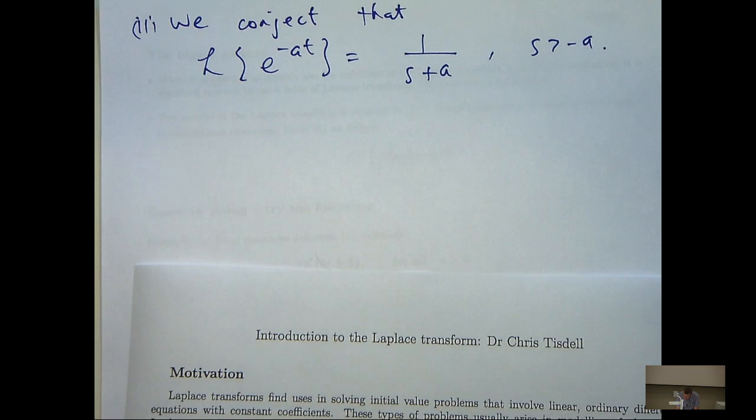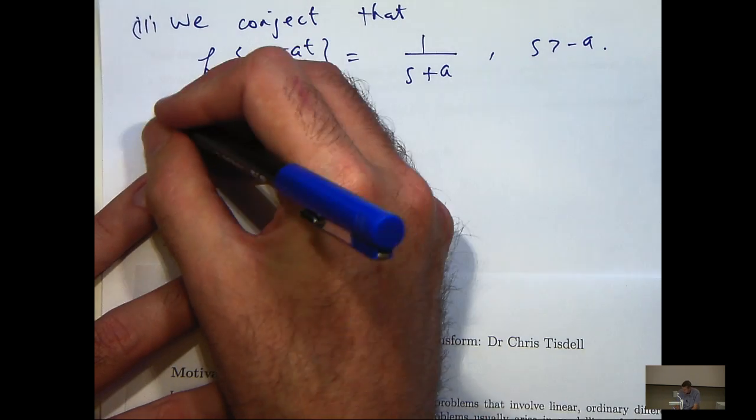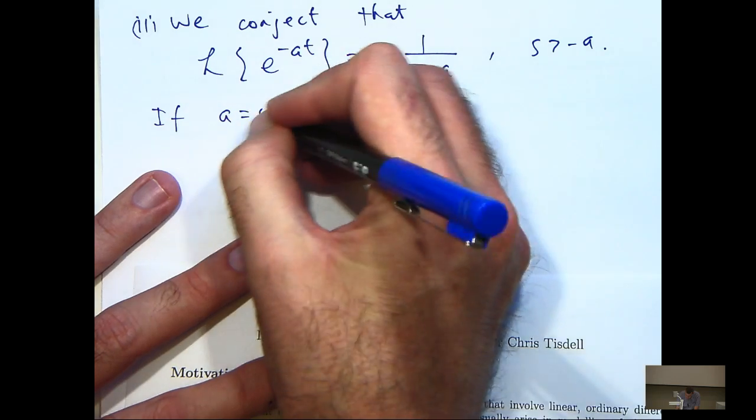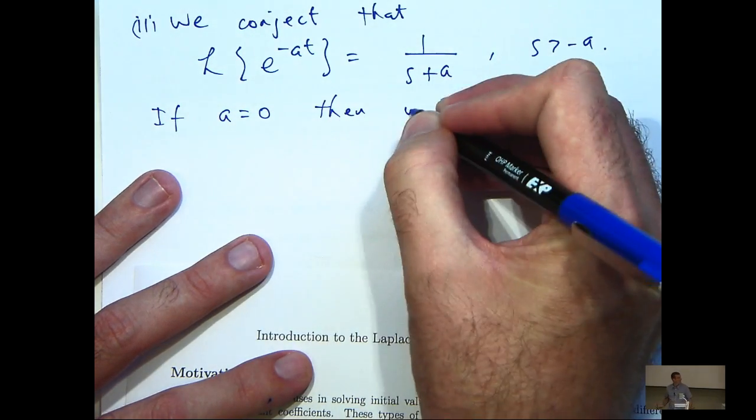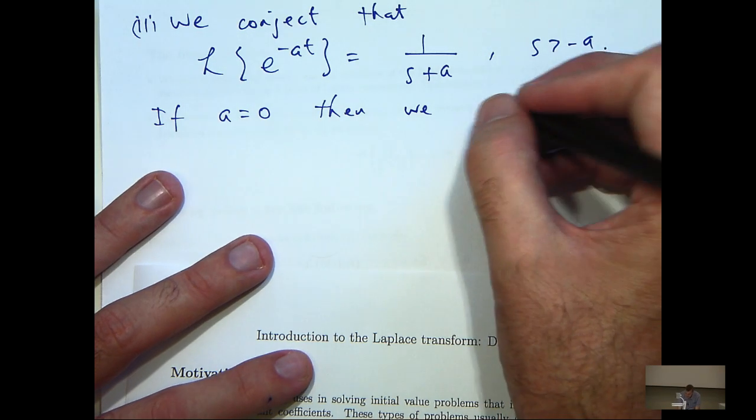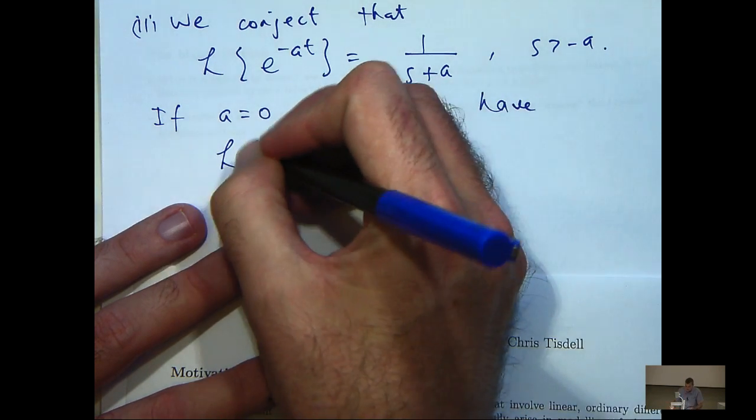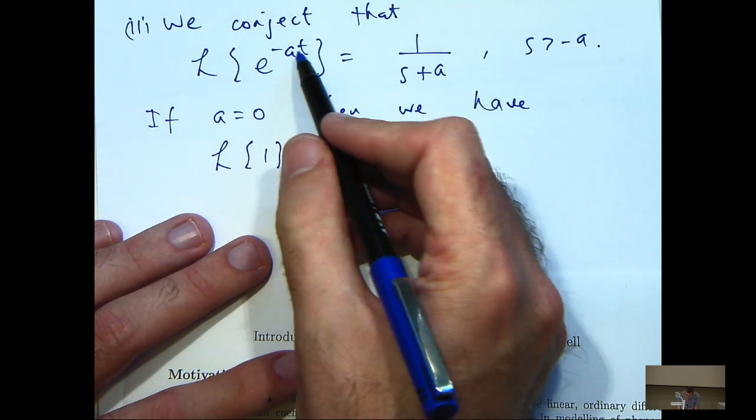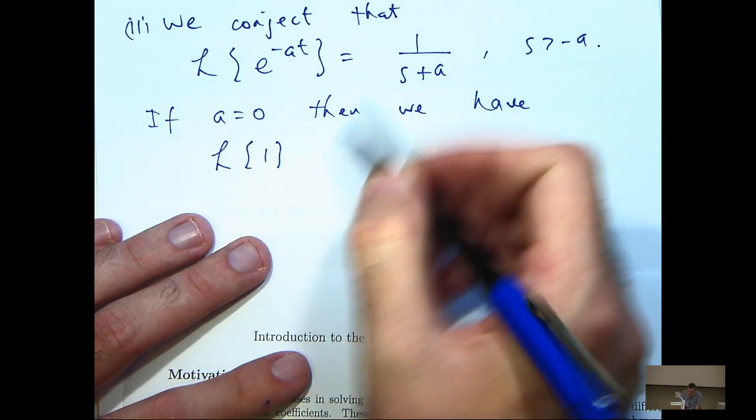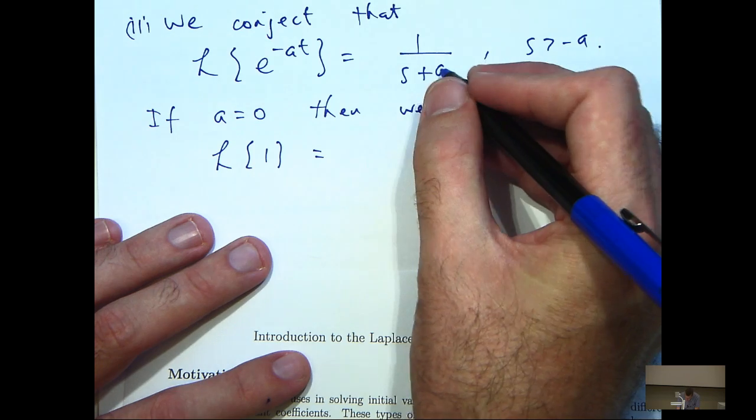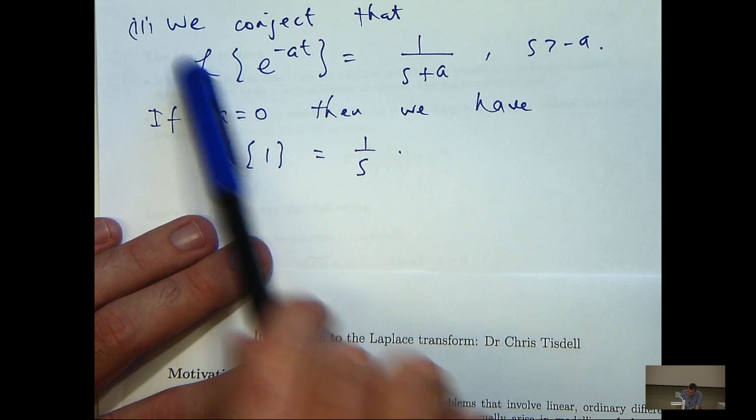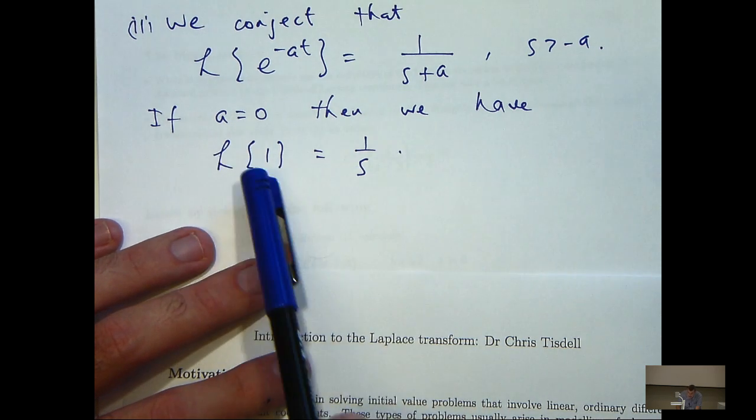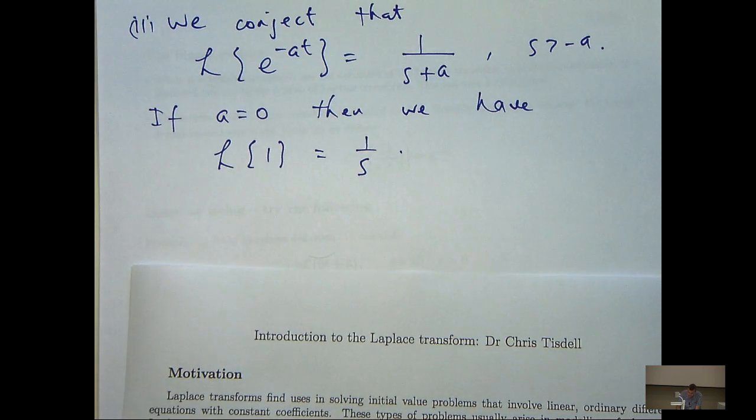Okay, in fact, you can easily prove that but I'm not going to repeat the proof. You might think, well, so what? Well, if a equals 0 in here, then we have the following. Okay, if a equals 0, we have e to the 0 which is 1 and just placing a equals 0 in here, we get this. So, from this, we've just calculated the Laplace transform of 1.